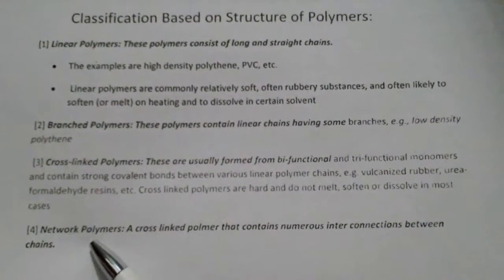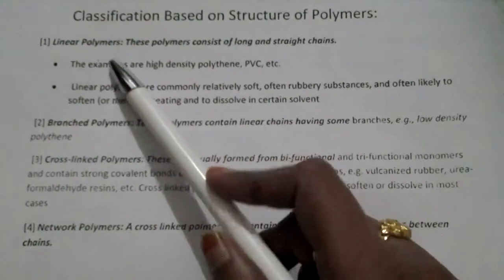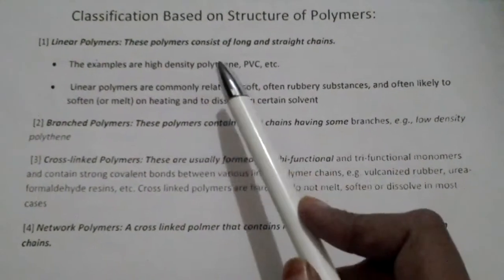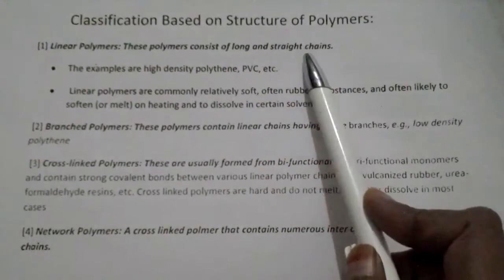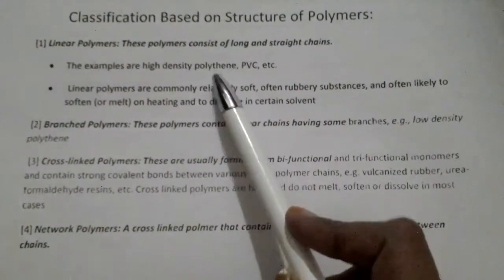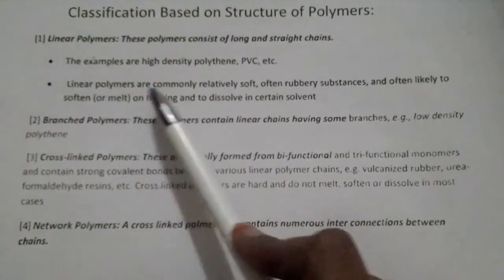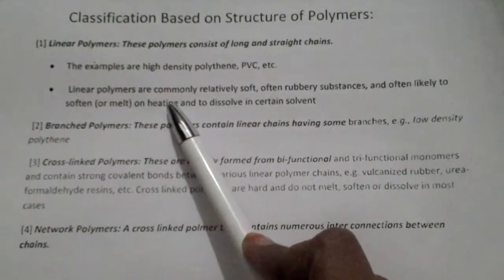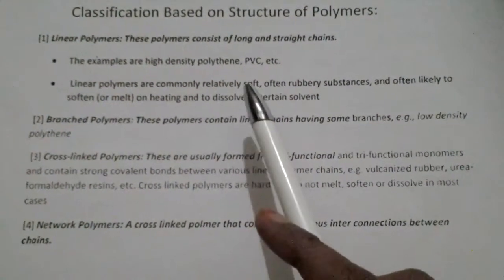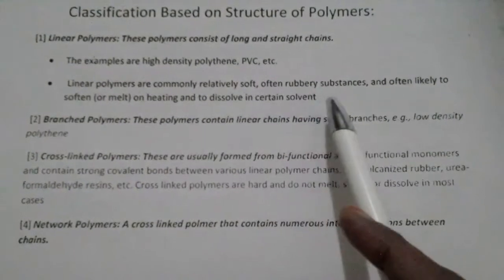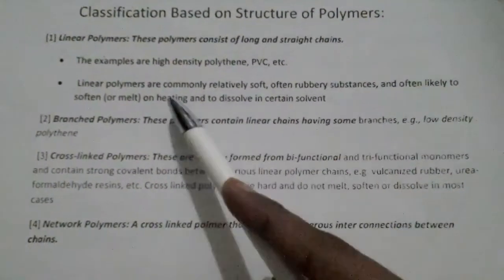First of all, linear polymers. These polymers contain long and straight chains. For example, polythene and PVC pipes. These linear polymers are soft and often rubbery substances.